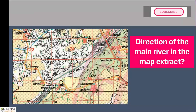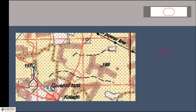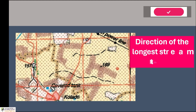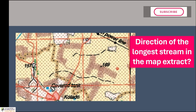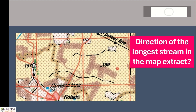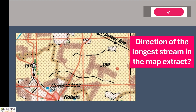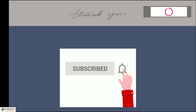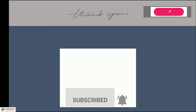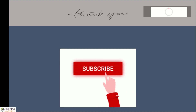Find out the direction of flow of the main river in the map extract — an arrow is given, so it will be easy. And in another case, find out the direction of the stream in the map extract. There are only three main streams, and the longest one is flowing from either west to east or east to west — find out the direction of flow with the help of the hints available in the map. That is how we find the direction of flow of rivers.